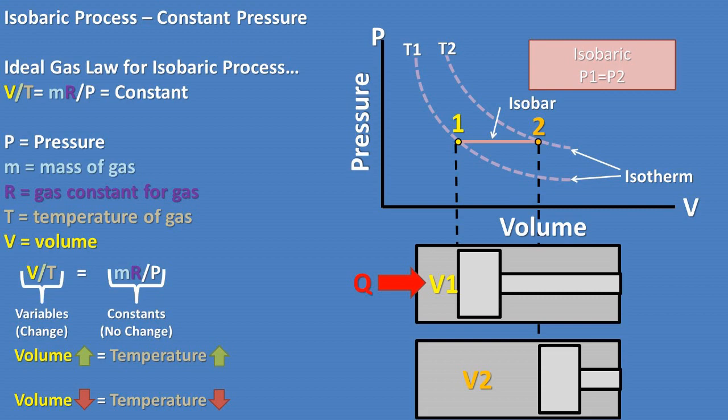Notice that in order to keep the right side of the equation constant, if volume increases, then temperature must increase, and if volume decreases, then temperature must also decrease. So volume and temperature are proportional.